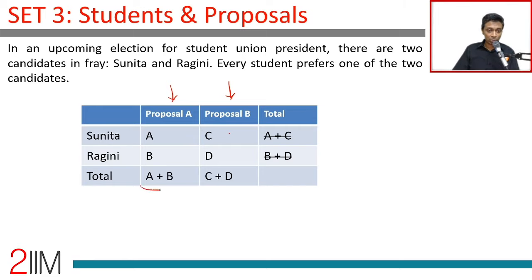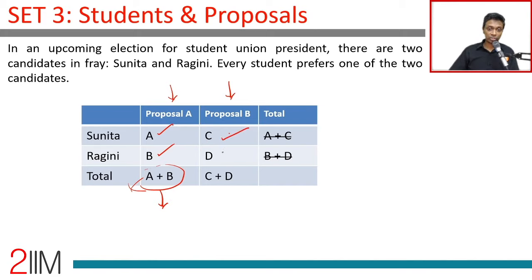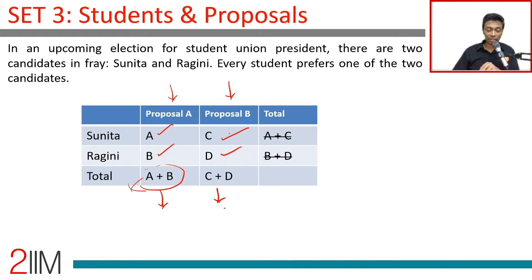The total people on proposal A — I can add the Sunita column and Ragini column — this will work. For proposal B, same addition works. So if 40 people who like proposal B voted for Sunita and 90 voted for Ragini, then 40 plus 90 equals 130 who voted for proposal B, because beyond Sunita and Ragini there's no further classification.